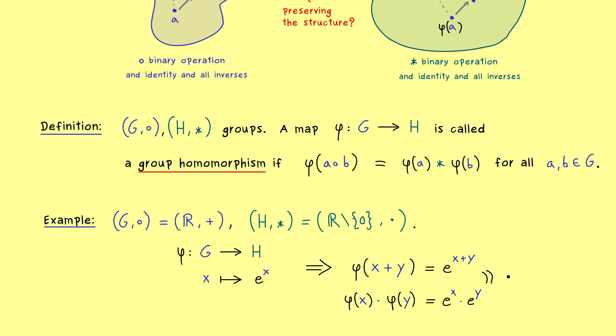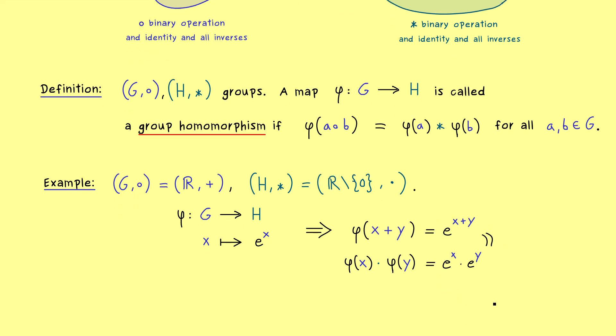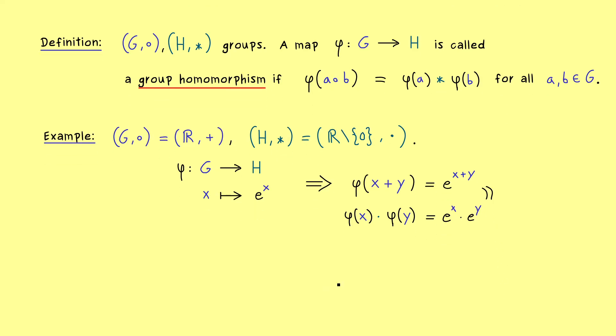And now we recognize that the left hand side and the right hand side are actually the same by the basic exponent rule. This should not be so surprising, because this is the fundamental property of the exponential function. And now we get a different formulation for that, because it's simply given by a group homomorphism. More precisely, the translation from the addition into the multiplication.